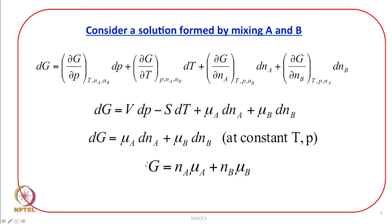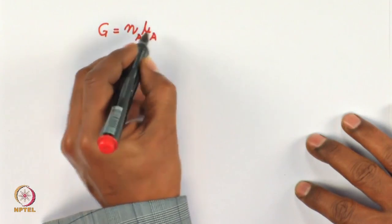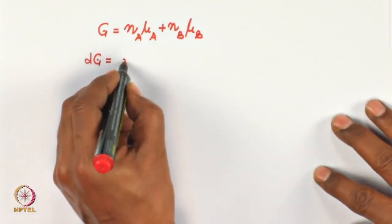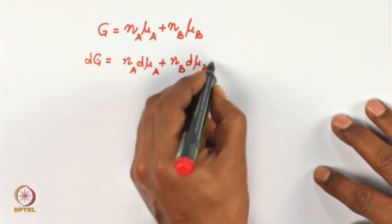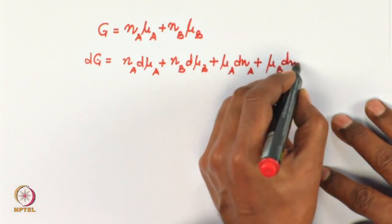Integrating and treating chemical potentials as constant, we get G = μ_A N_A + μ_B N_B. This means if we have information on the chemical potentials of A and B and the number of moles of A and B, we can calculate the total value of Gibbs free energy.